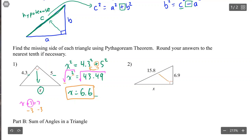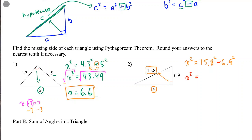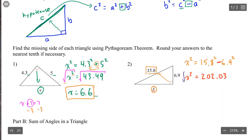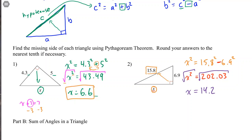In this second example, the longest side — the hypotenuse — is 15.8, which means we're finding a short side. We set it up the same way: x squared equals 15.8 squared minus 6.9 squared, because we need to subtract to get a smaller number. Working it out, x squared equals 202.03, and our last step is always to square root, which gives us x equals 14.2. There are no units in this question.